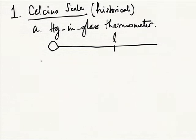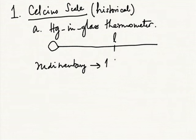Because it was a rudimentary system, there was only one property of significance — the scale could be defined by one property. Since it was a solid thing with constant volume, the one property you could observe as the state changed was the length L of the mercury in the capillary; that was the only thing that changed. So the states are simply labeled by the length of mercury.